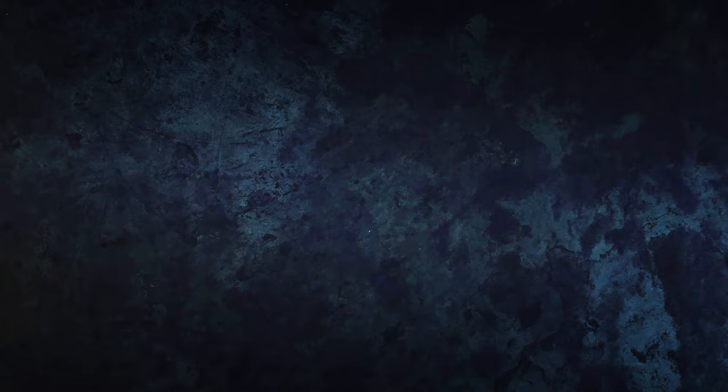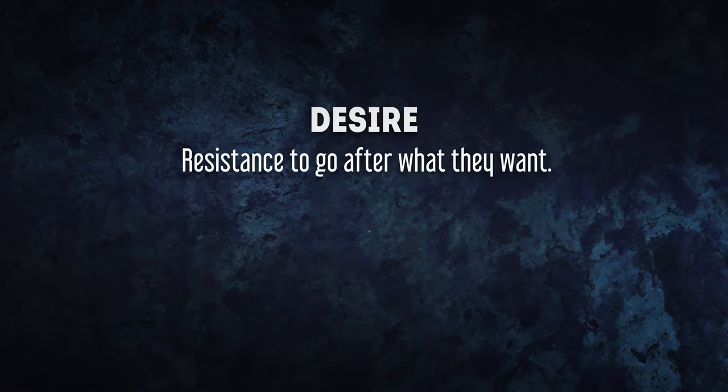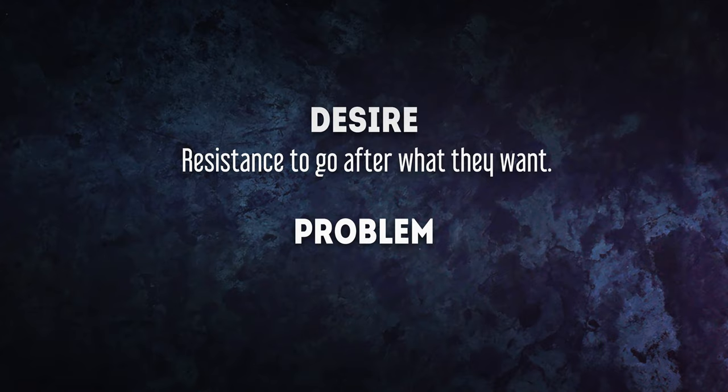There are two things that they are resisting. They are resisting to go after what they want — at the start of the story they're not going after what they want, even though they want it. The other thing they could be resisting is facing an ongoing problem. At the start of the story they are actively trying to ignore a problem that won't go away on its own. Something is causing misery or limitations in their life and they're not doing anything about it. In Act 1 we see how they convince themselves and others that they should stay put — why they shouldn't go after what they want, why they shouldn't face the nagging problem.